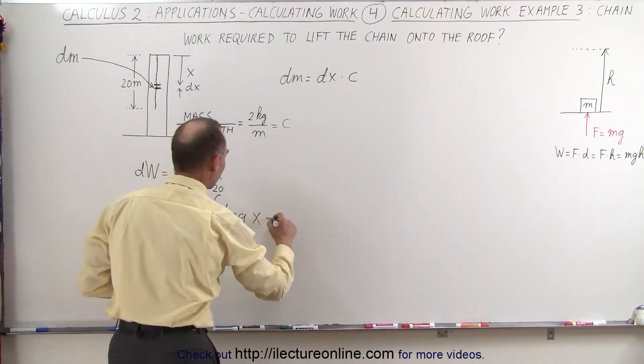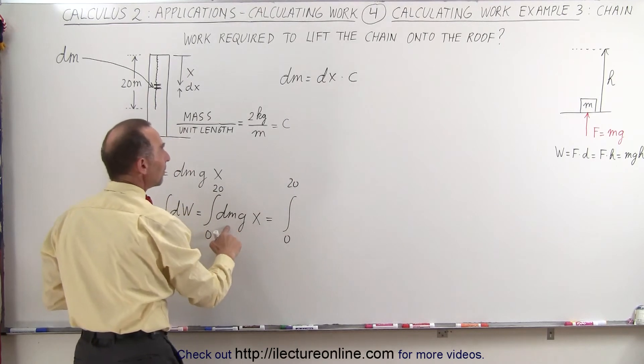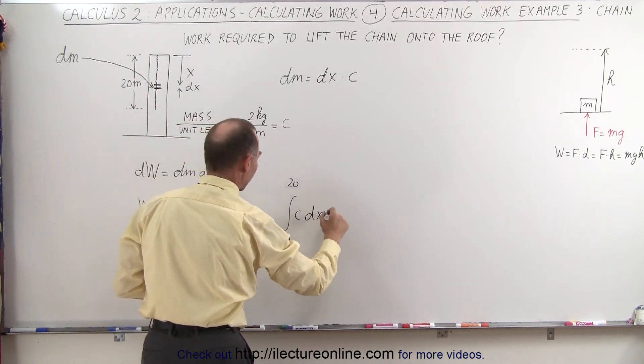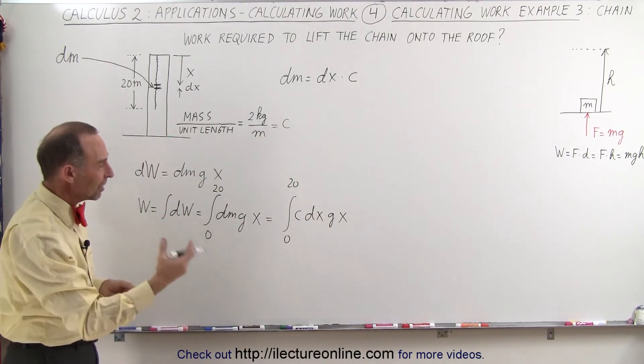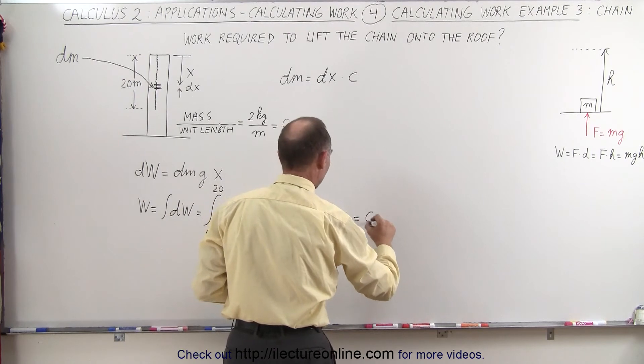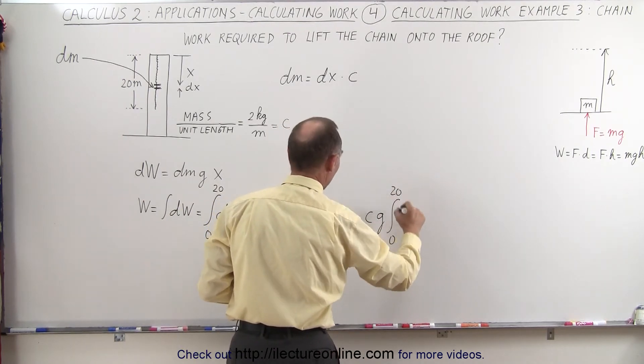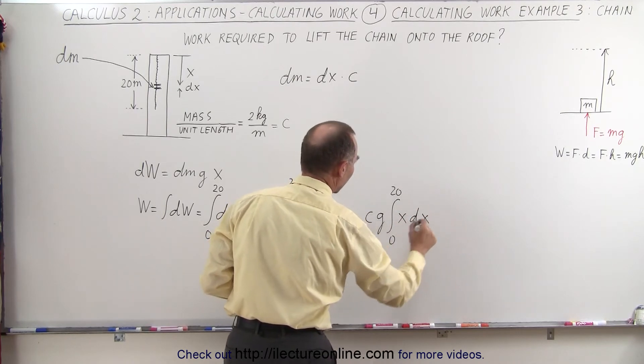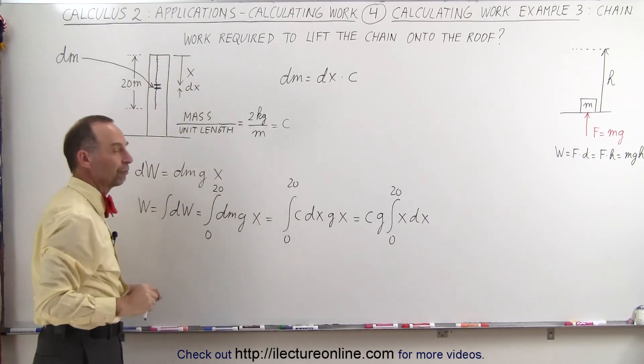So this can then be written as the integral from 0 to 20, and instead of dm we can write c dx times g times x. And then of course we can pull the c and the g out of the integral sign because they're both constants. So this is equal to c times g times the integral from 0 to 20 of x times dx. And that will then be all of the work done to pull the entire chain up onto the roof.